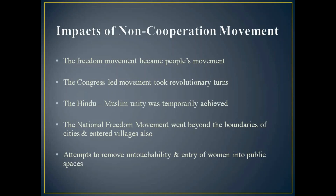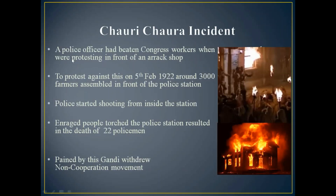Now, why did the Non-Cooperation Movement end? The main reason is the Chauri Chaura incident. A police officer had beaten Congress workers when they were protesting in front of an erect shop. They were holding torches and going in a peaceful procession at night when the police beat the protesters. To protest this, on 5th February 1922, around 3000 farmers assembled in front of the police station.